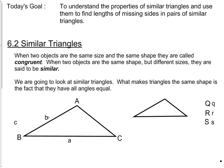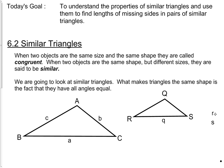Which means that this side over here is little b, and this side over here is little c. For the smaller triangle, we're going to call it QRS. This angle is Q, this angle is R, and this angle is S. Which means by the same naming convention, the side across from capital Q must be small q, this must be little r, and this must be little s.